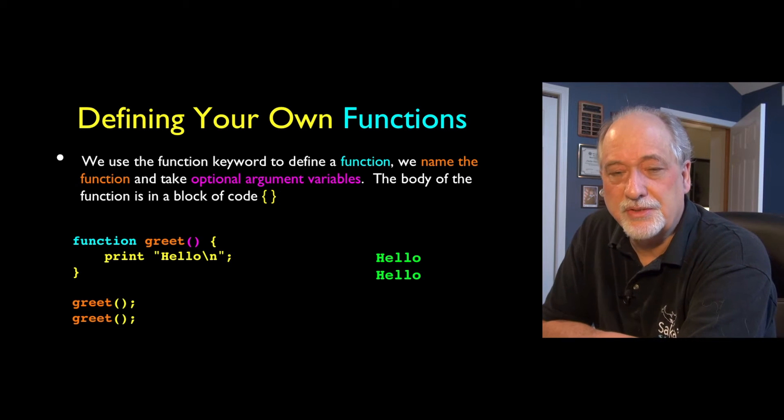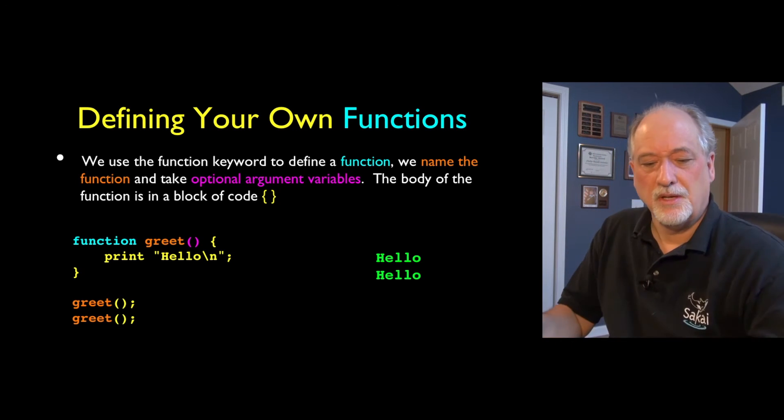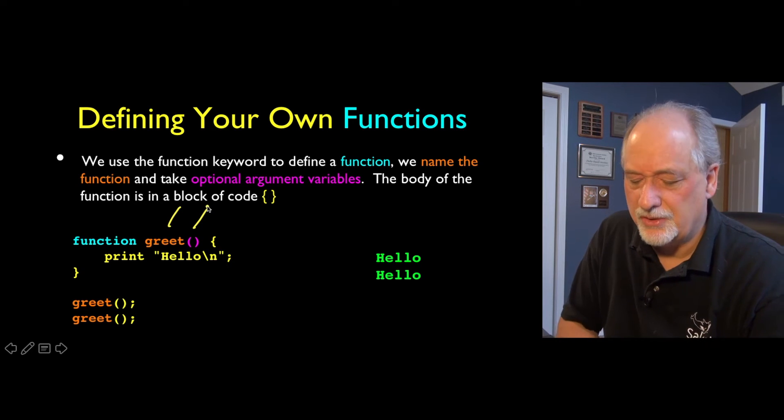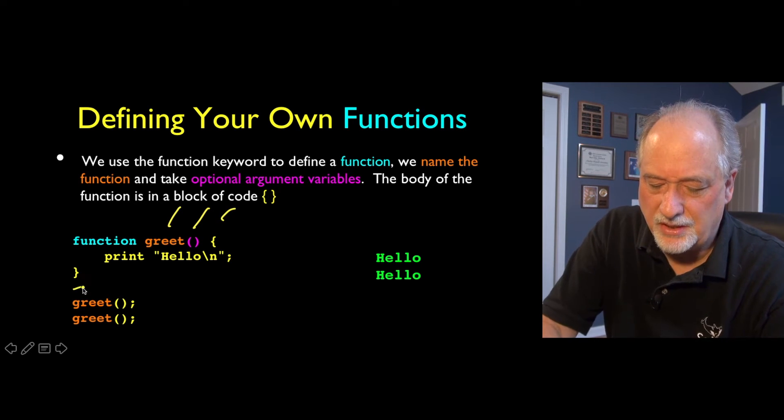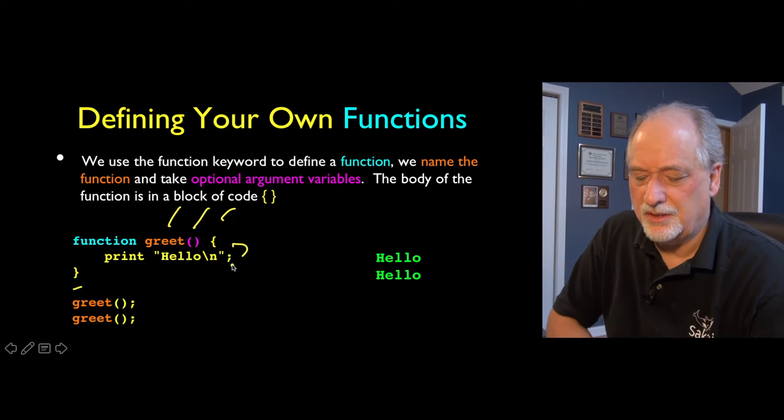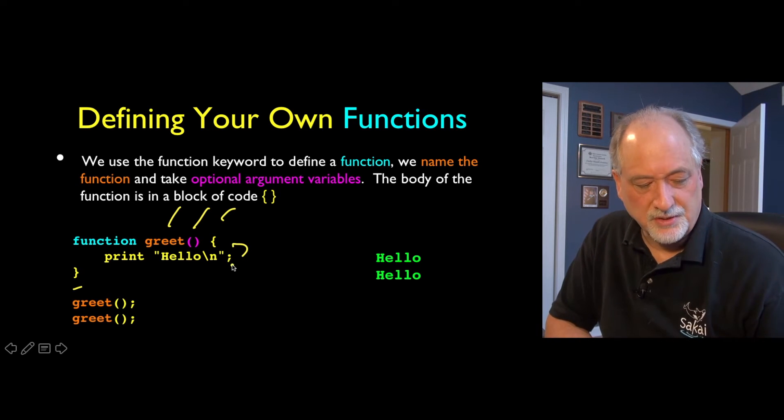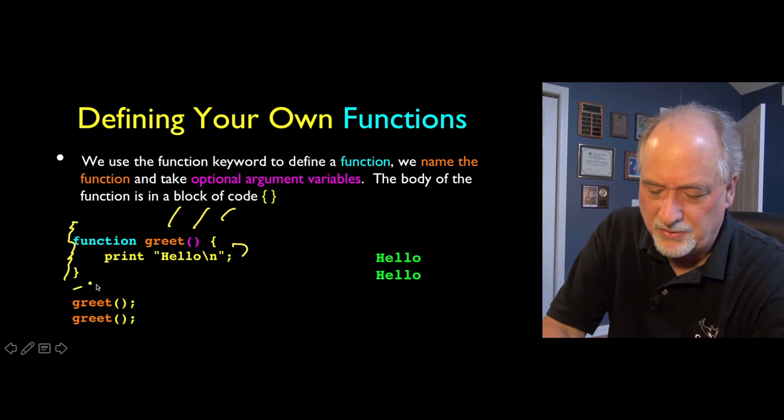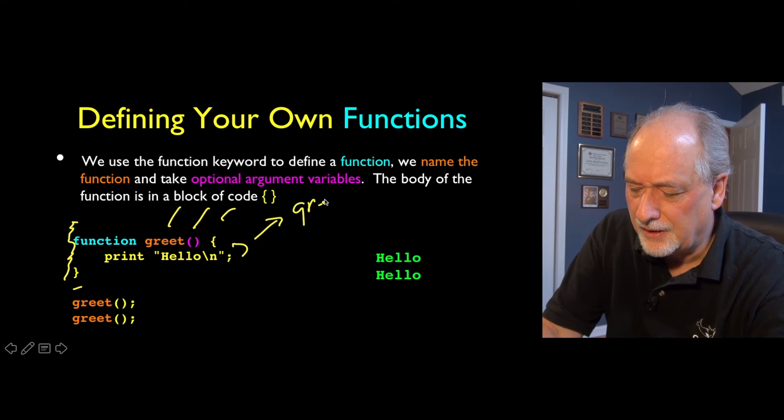To define your own functions, there's a keyword called function. And you give the function name, an optional list of parameters, and then a starting curly brace, and an ending curly brace, and then the function is the body. And of course, it's the store and repeat pattern where as PHP runs this code, it's simply remembering this new greet thing.